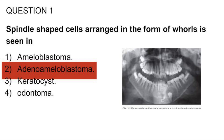Adenoameloblastoma, or adenomatoid odontogenic tumor, occurs below 20 years of age. This tumor is associated with unerupted teeth, and in over two-thirds of cases the tooth is a maxillary cuspid. Adenomatoid odontogenic tumor is characterized histologically by tubular or duct-like cells. These duct-like or microcyst lumina are frequently lined by eosinophilic material of varying thickness, forming the so-called hyaline ring. So the answer is adenoameloblastoma.